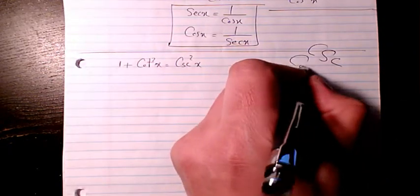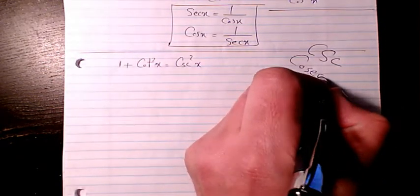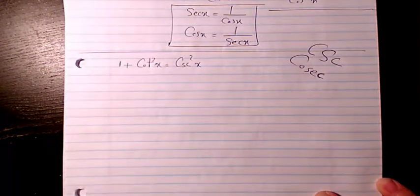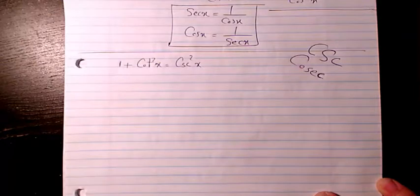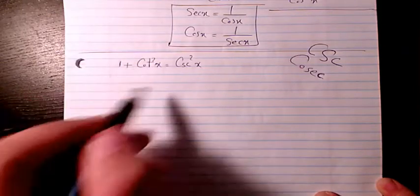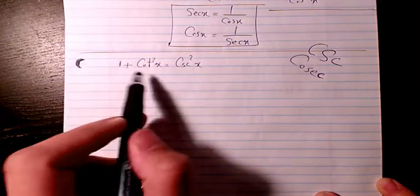sometimes it's written as C-O-S-E-C. Both are correct but CSC is the more common and proper name. Let's go back here. I will start from the left hand side because it looks more complicated than the right hand side. 1 plus, then I want to expand